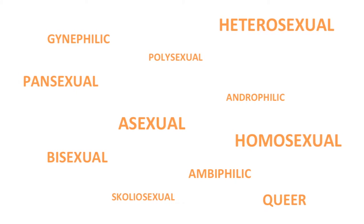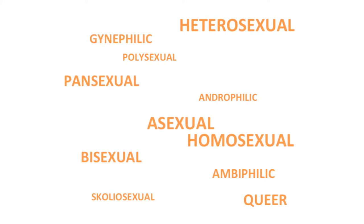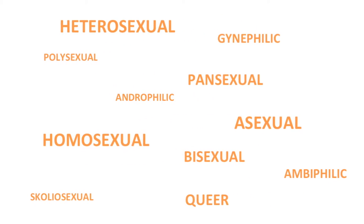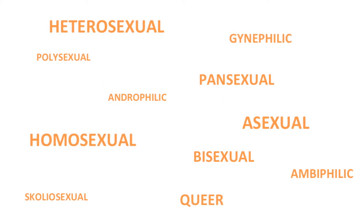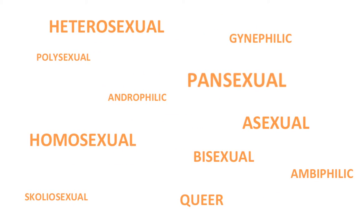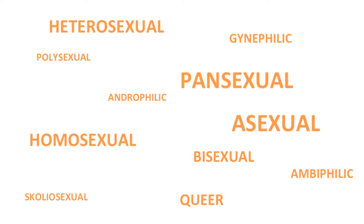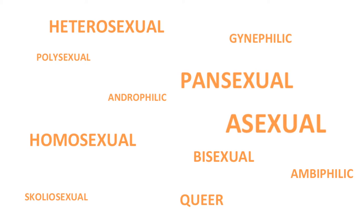People may use different terms to describe where they are on the spectrum. For example, pansexual people love people of all sexes and gender identities, and asexual people don't experience sexual arousal even though they still feel love and may have a desire for companionship.